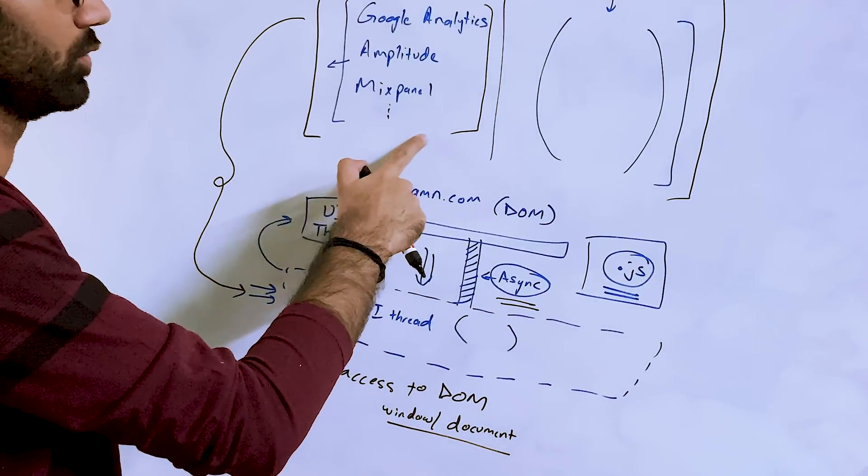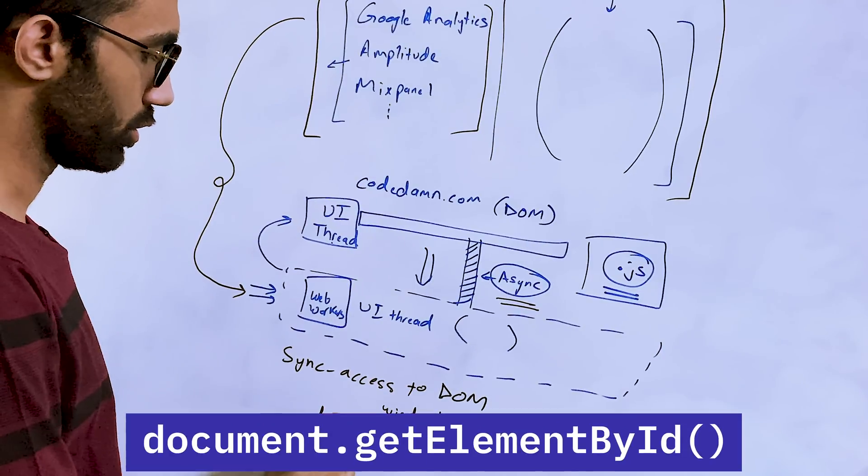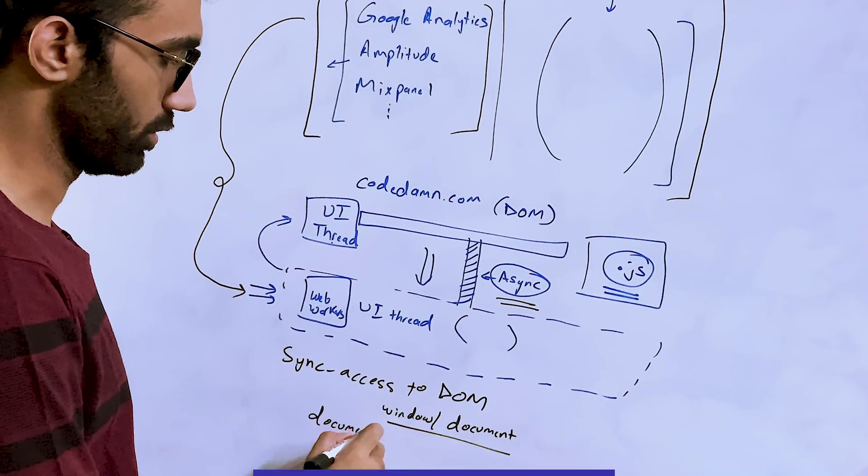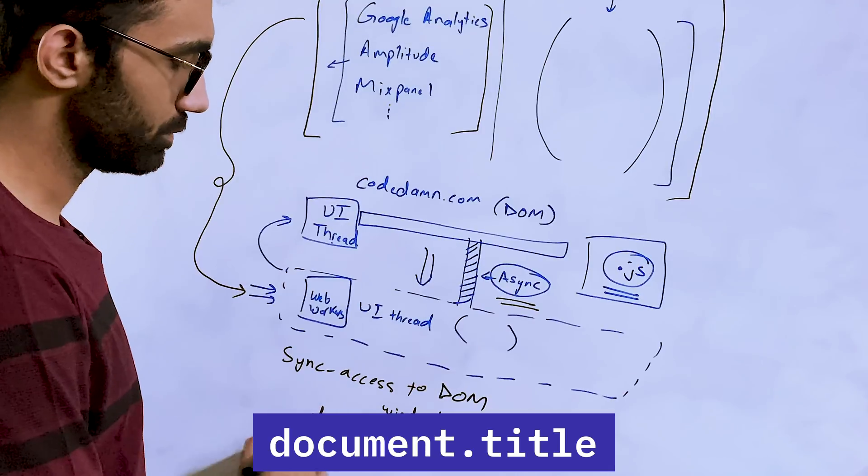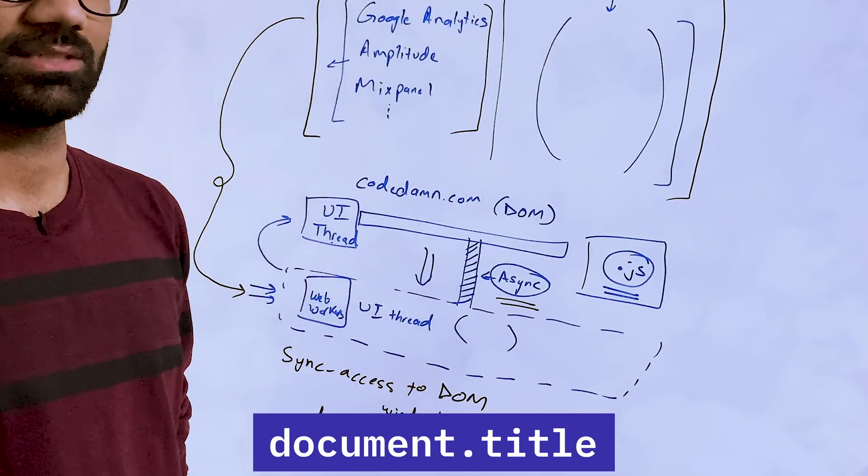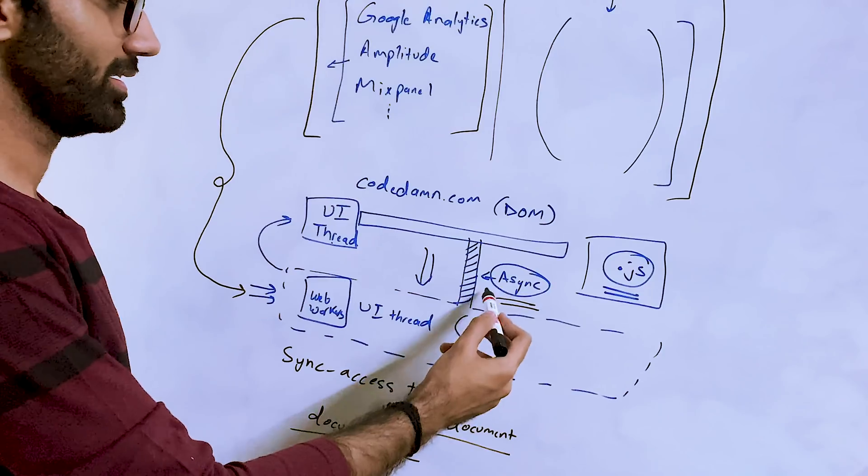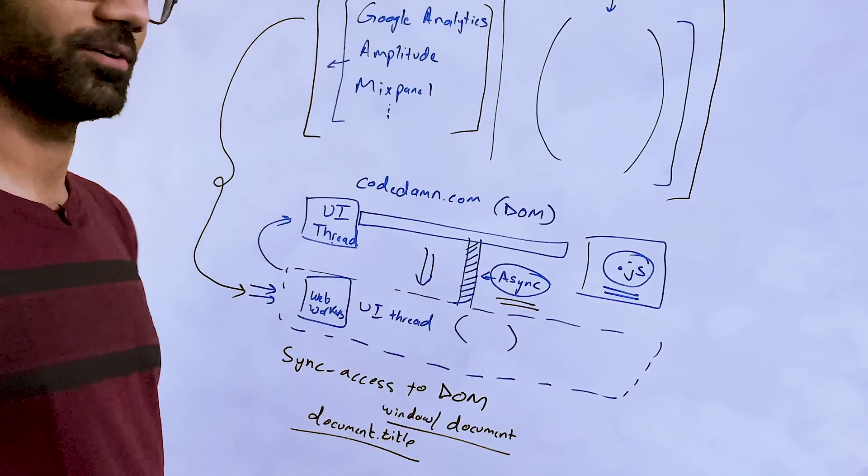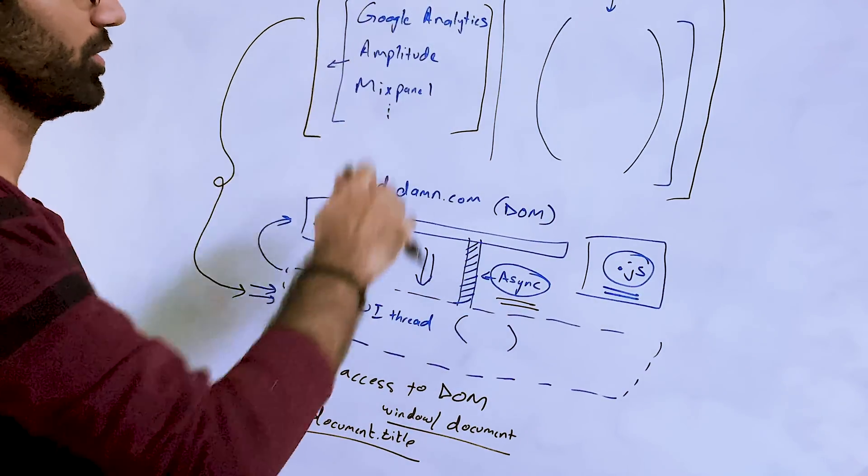If I'm writing something like document.getElementById or document.title for example and I expect this value to immediately return me something, now how do you make asynchronous calls synchronous? This is what these guys figured out with a really weird hack.